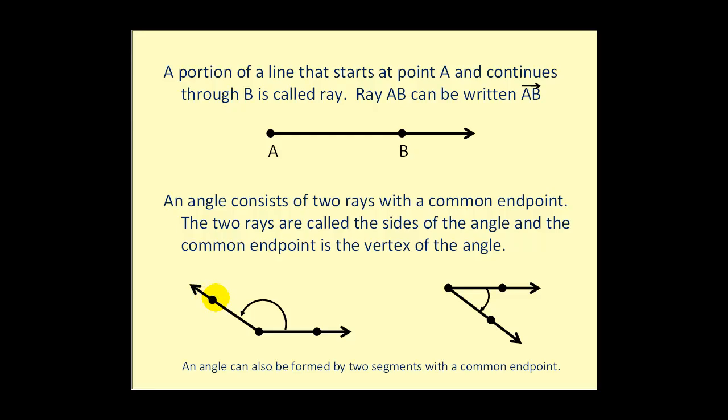There are a couple ways to identify angles. If we call this point A, B, and C, there's only one angle at vertex B, we can simply just call this angle B. However, we can also call this angle ABC. And the important part is that the vertex is the variable in the middle.